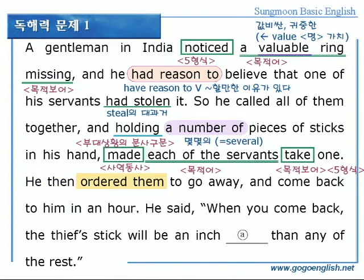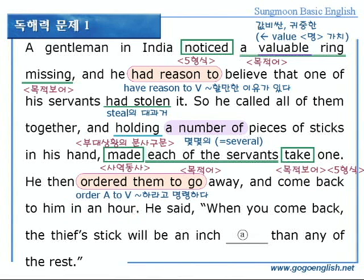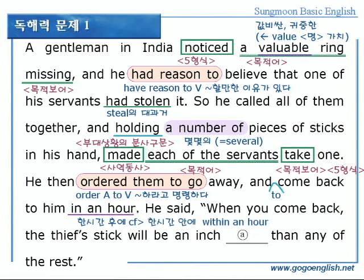he then, 그는 그리고 나서, ordered them, 그들에게 명령했다, to go away, 멀리 가라고 명령했다, and come back to him, 그에게 돌아오라고, in an hour, 한 시간 후에. order A to부정사는 A에게 ~하라고 명령하다라는 의미가 됩니다. 역시 5형식 문장으로, order의 목적보어로는 to부정사가 온다는 것을 기억해 두시기 바랍니다. come back 역시 앞에 order에 걸리는 목적보어로서, 앞에 to가 생략된 것입니다. in an hour는 절대로 한 시간 안에 라고 해석하지 마시고요, 시간의 개념과 함께 쓰이는 in은 시간의 경과를 나타냅니다. 그래서 한 시간 후에 라고 해석하시기 바랍니다. 그럼, 한 시간 이내에는 within, W-I-T-H-I-N, 이라고 표현하시면 되겠습니다.